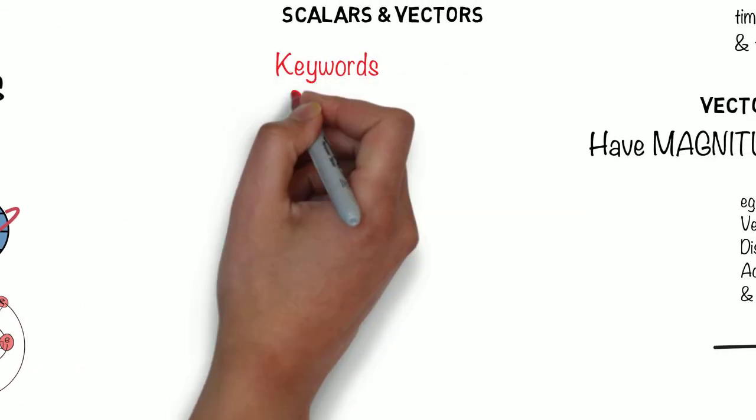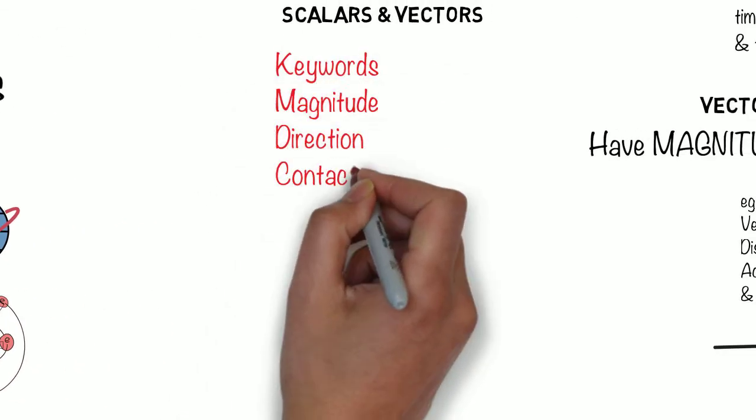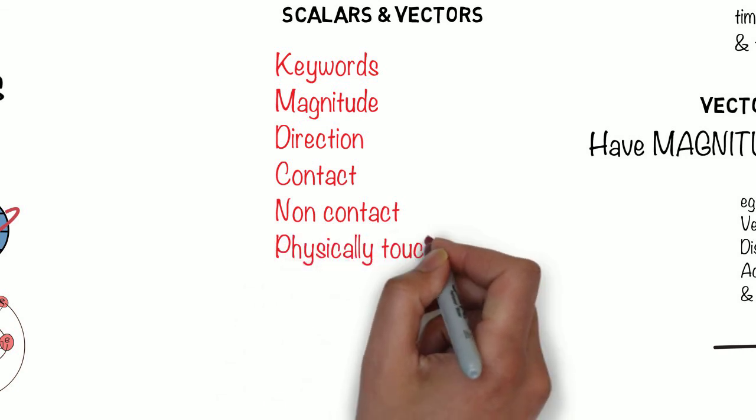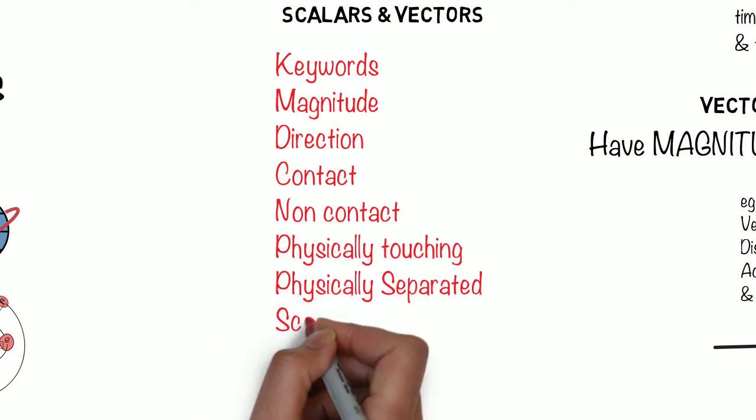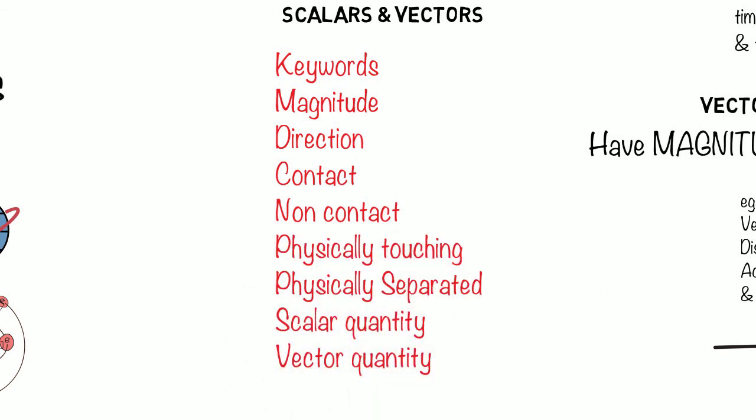Right, the keywords you need to know for the exam are: magnitude, direction, contact, non-contact, physically touching, physically separated, scalar quantity, and vector quantity.